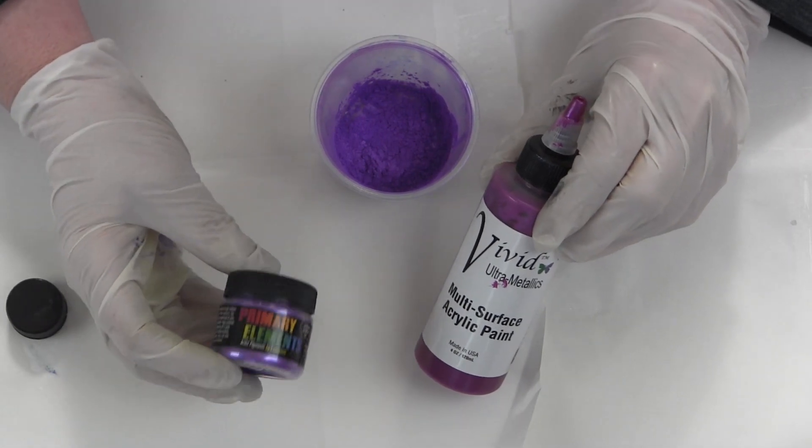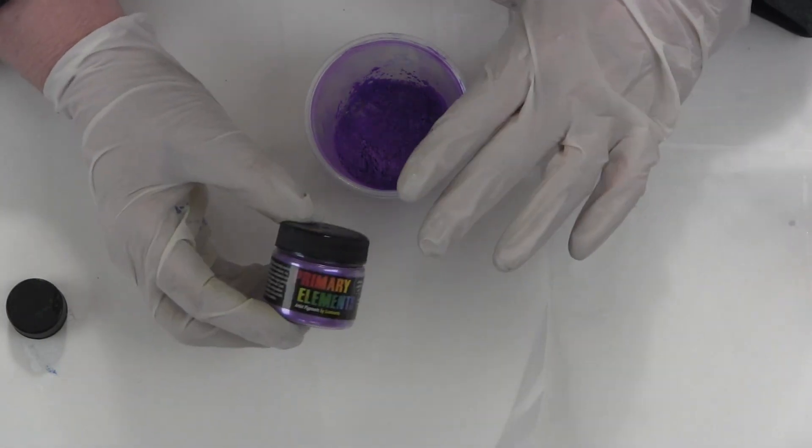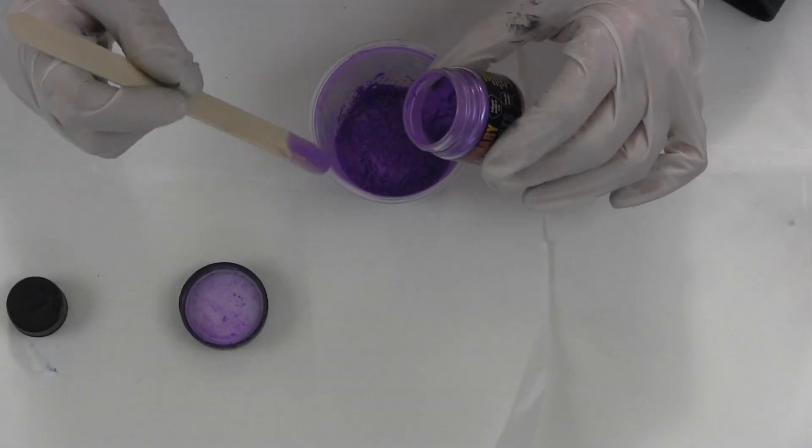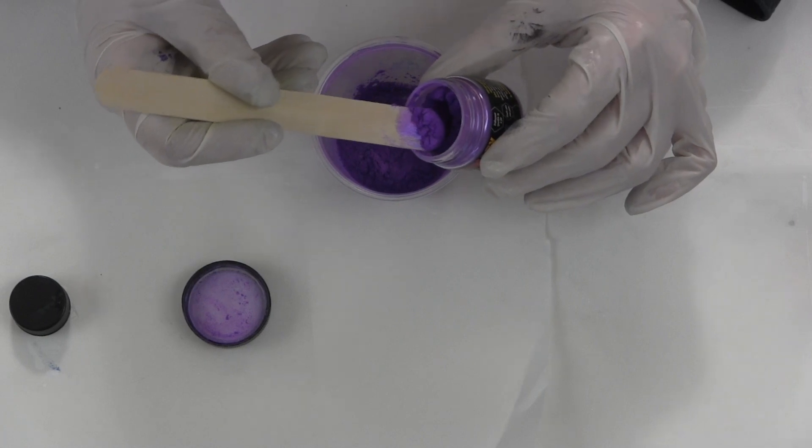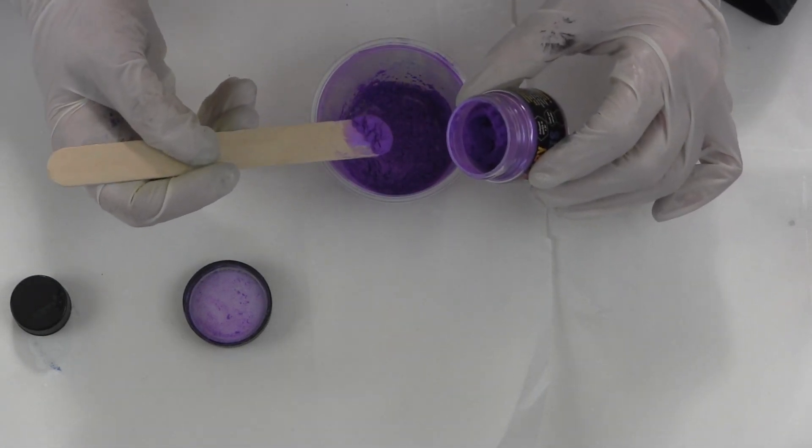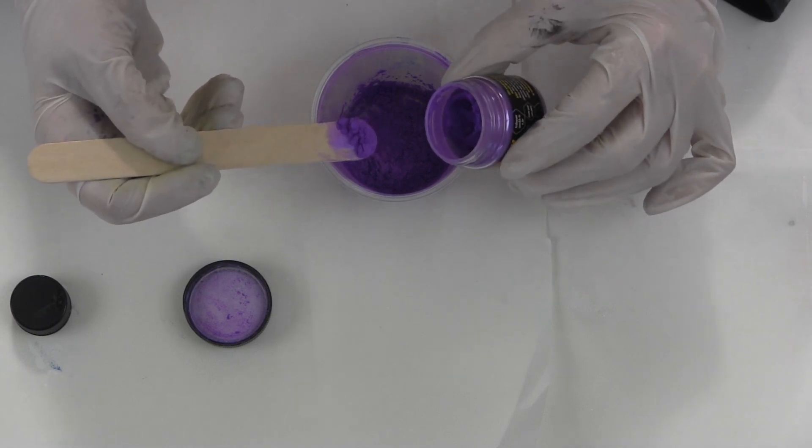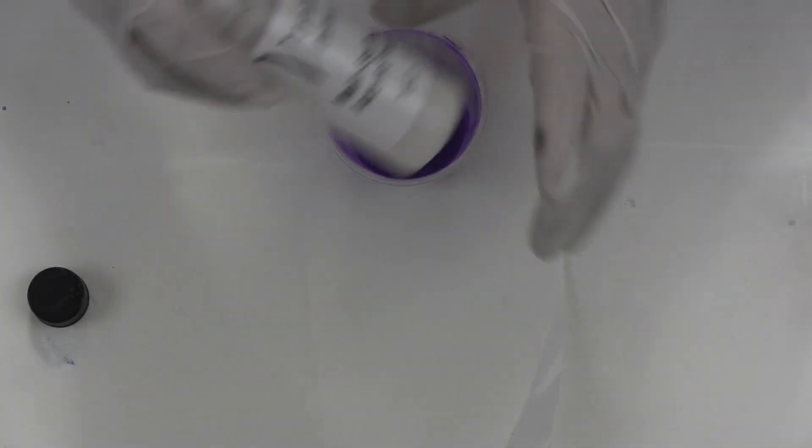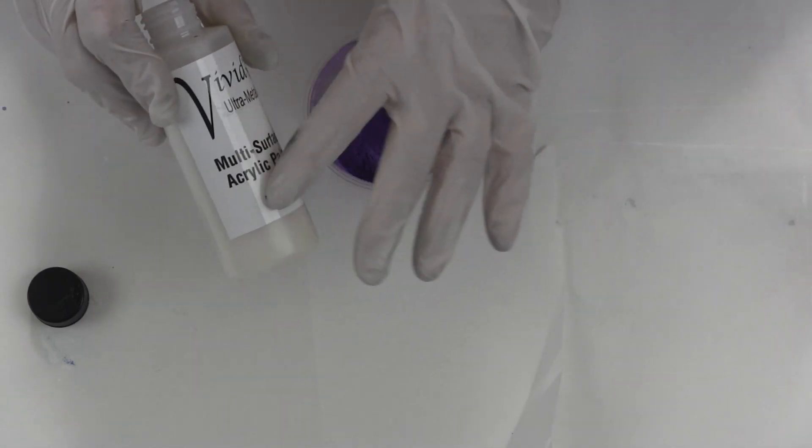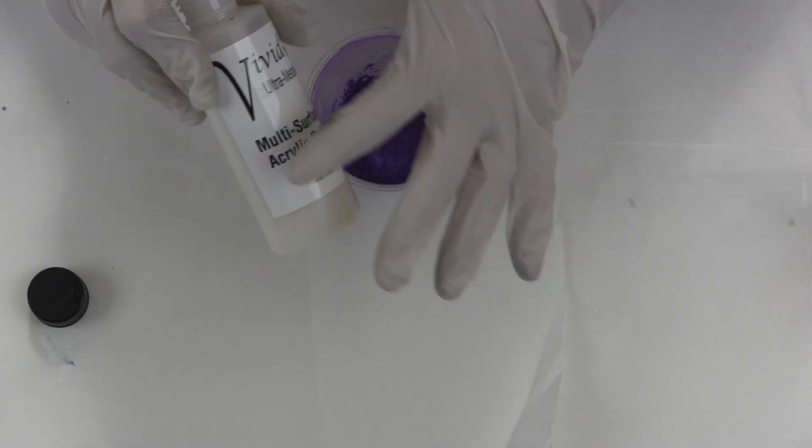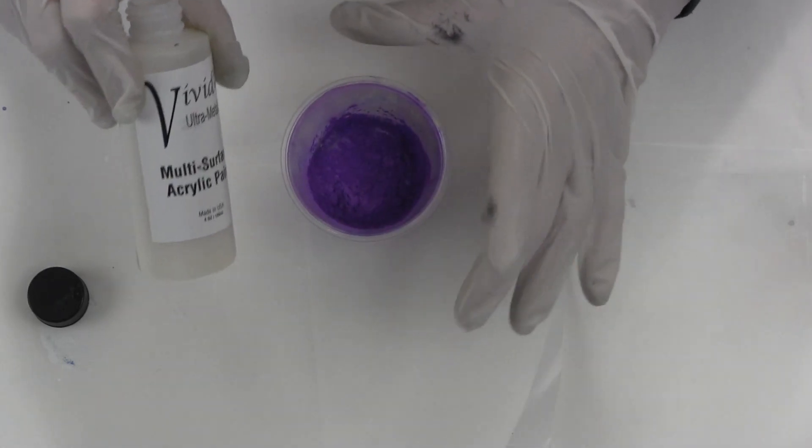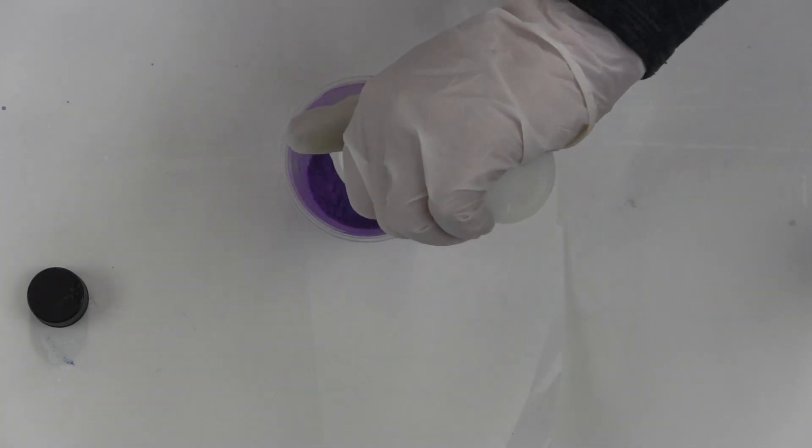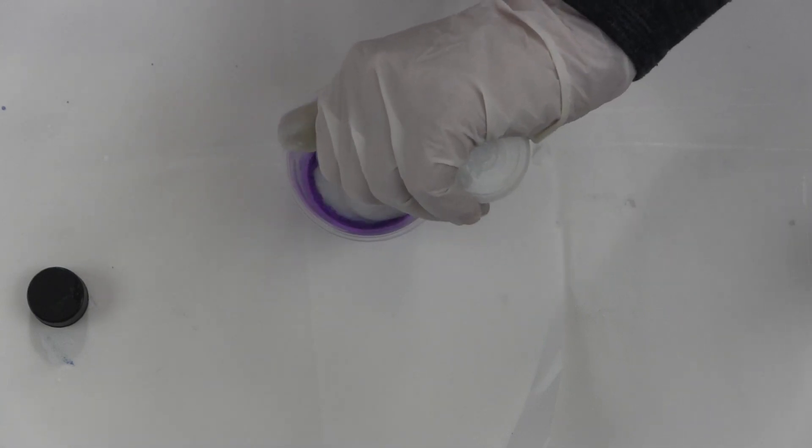For paint pouring and everything we make - watercolors, our silks acrylic glaze, our vivid ultra metallics - they all stem from the same color base that our pigments are made out of. You could buy the vivid multi-surface acrylic paint. It is an acrylic enamel, not just a regular acrylic.